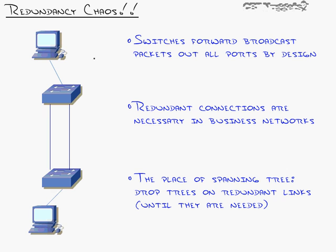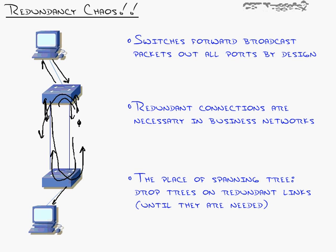By default, a switch will send broadcast packets out all ports. So when a computer sends a broadcast packet into the network, the switch says it doesn't know where that goes and sends it out every port except the one it received it on. The adjacent switch receives it, forwards it to its connected device, and loops it right back on the other port. The original switch receives it on both ports and sends it right back out again. This will keep happening eternally — the broadcast cycles the network, blowing up all devices until you shut everything down.